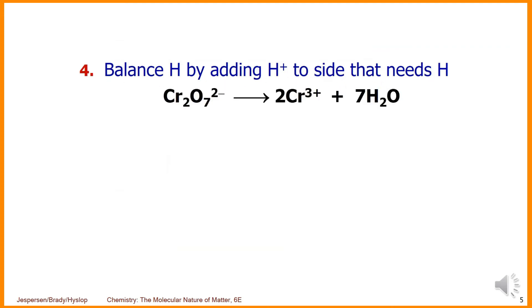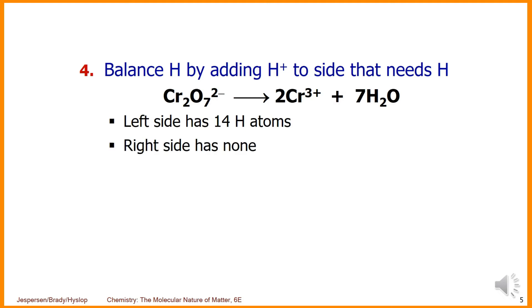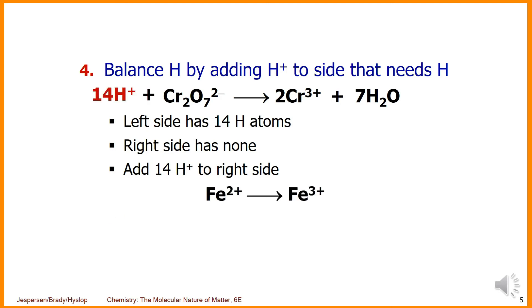Step four: balance hydrogen by adding H⁺ to the side that needs it. The right side now has 14 hydrogen atoms from the seven H₂O, while the left side has none, so we add 14 H⁺ to the left side. The Fe half-reaction has no hydrogen to balance.